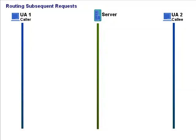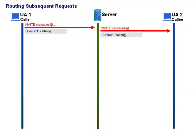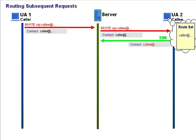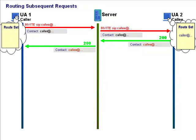Let's review the use of route sets when there's a proxy in the middle. The caller sends out his INVITE, including his contact address — the address to which subsequent requests should be routed back to him. The proxy receives the request and, after a lookup, proxies it downstream to the user agent server. The downstream user agent allocates memory space — a route set — specifically for remembering addresses for routing subsequent requests during this call, and stores in it the contact address of the caller.